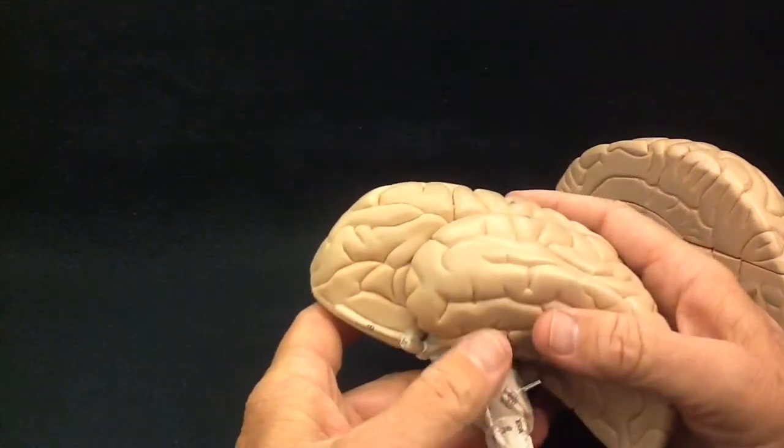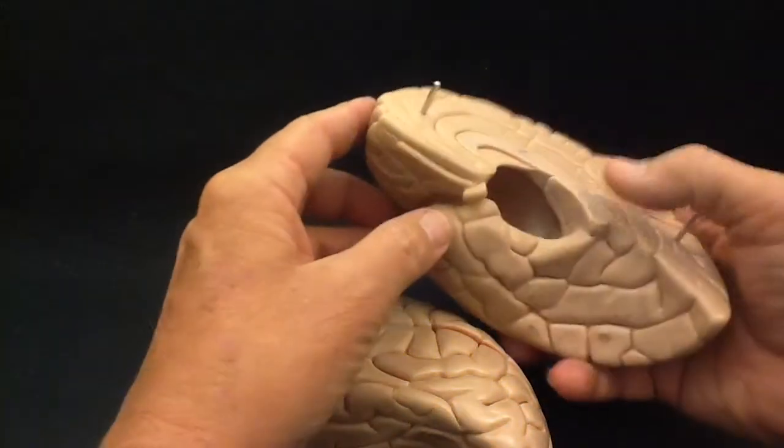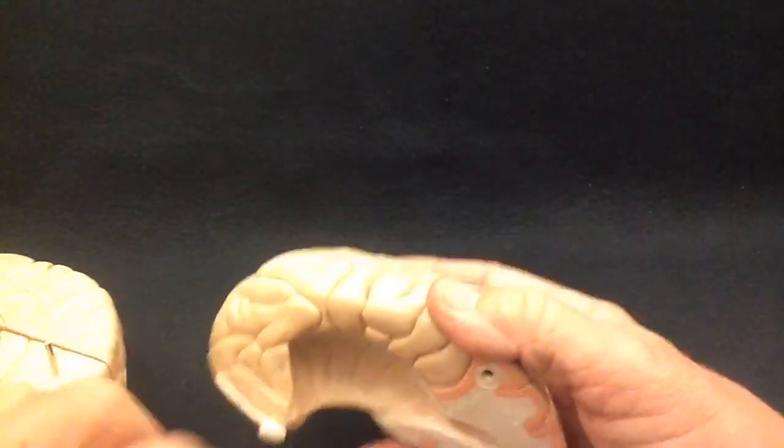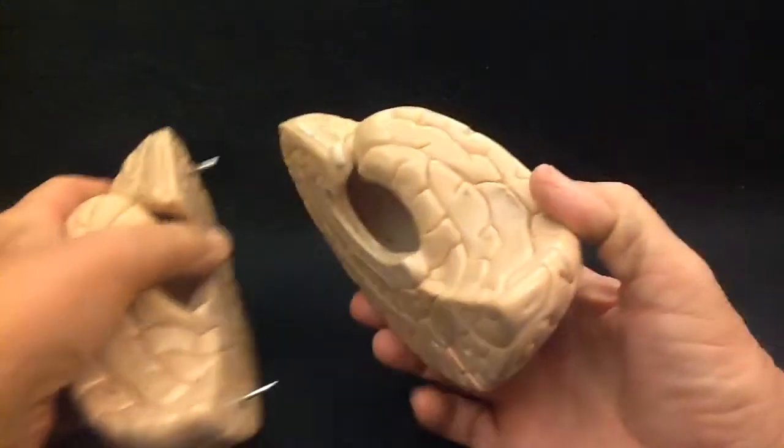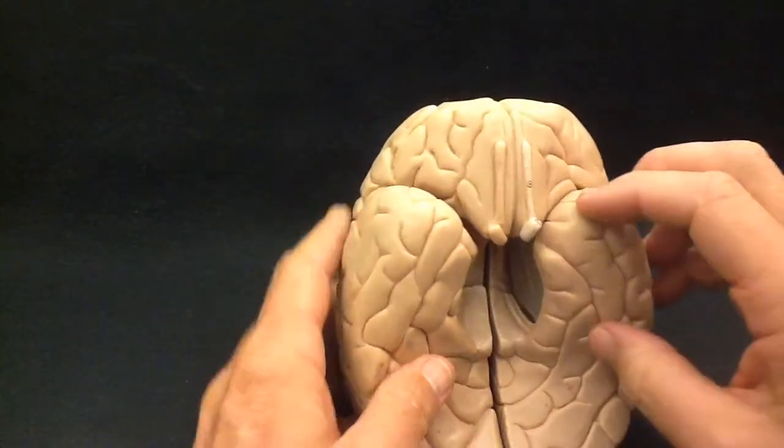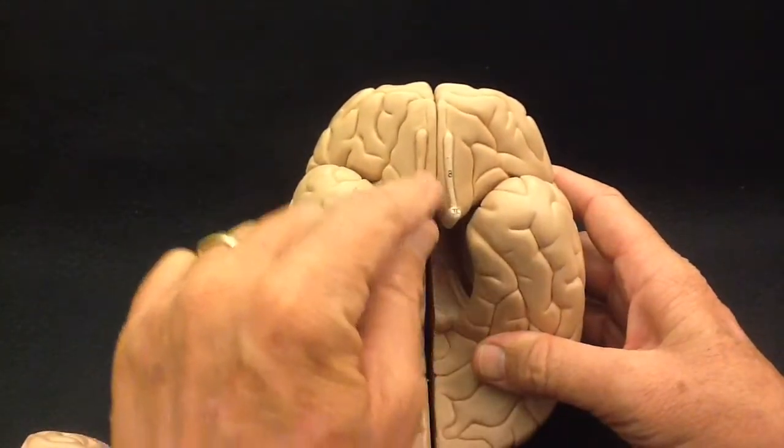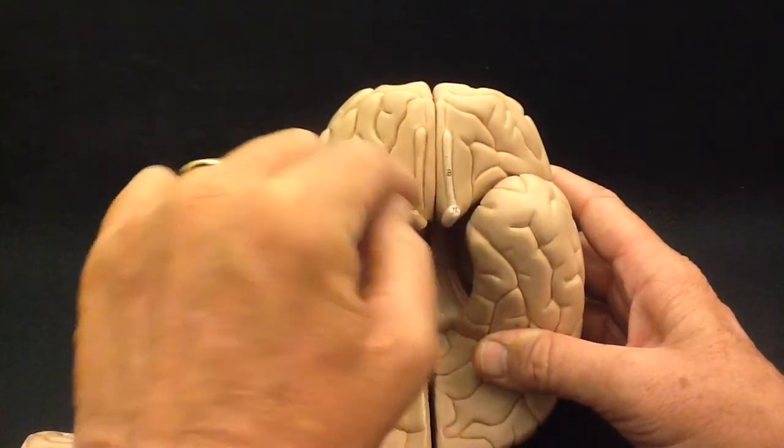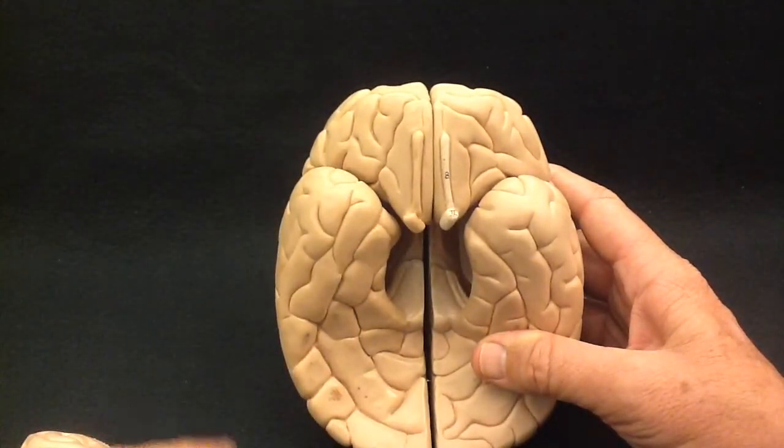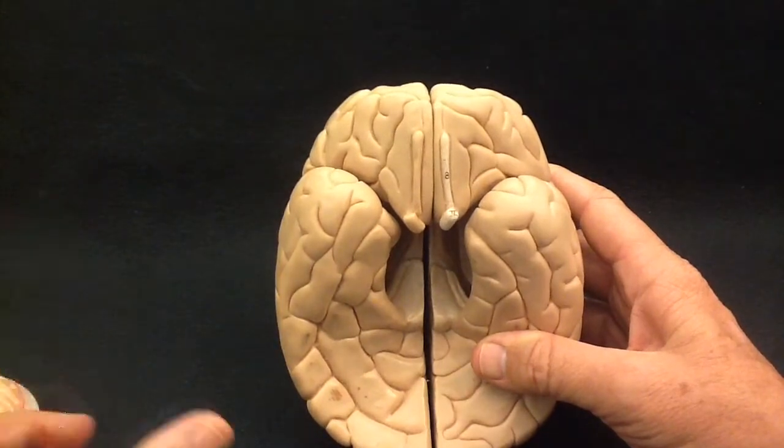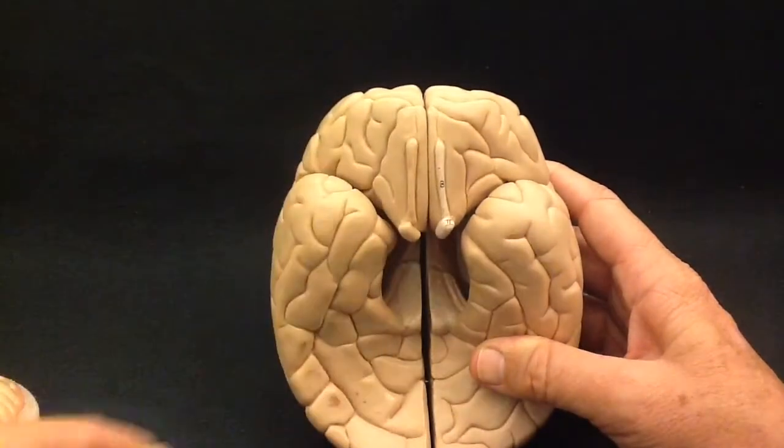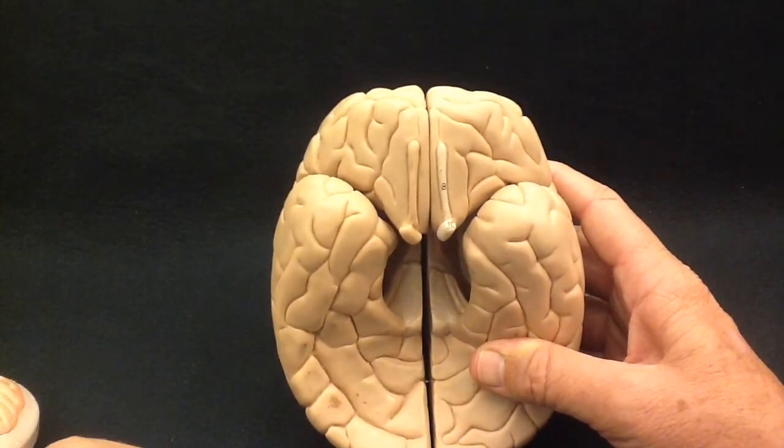The only other structures that we would identify here on a cerebrum then would be - let's put these back together. This model has the insula separate, so I had to take a moment and put that in. Here is the frontal lobe and the temporal lobes of the cerebrum, and you can see these long, slender little cords here under the frontal lobe. These are known as the olfactory bulbs. The olfactory bulbs, as the name would imply, have something to do with your sense of smell. They extend out over the nasal areas and drop little nerves down into your nasal passages.